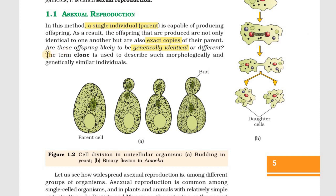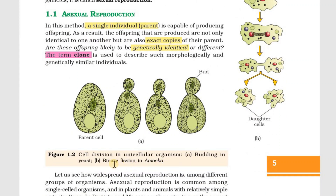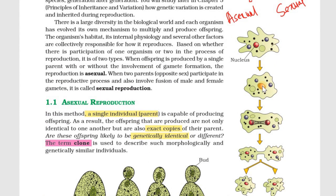For these individuals, we use the word 'clone.' This point is important — the clone word is an entrance exam question. Now let's go to types of asexual reproduction. One type is binary fission. Binary fission is seen in amoeba and paramecium. Here, a parent cell divides into two nuclei and two equal daughter cells — that is binary fission.